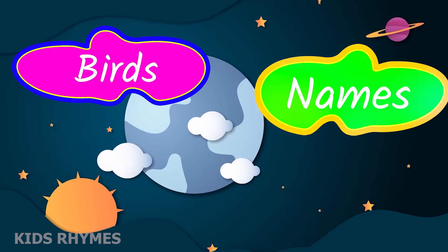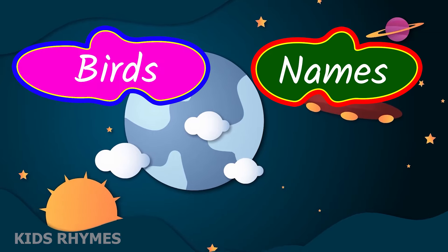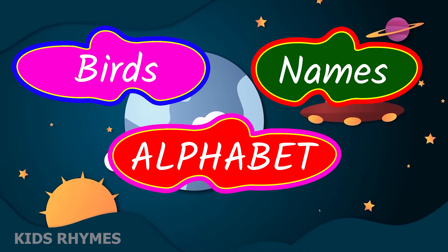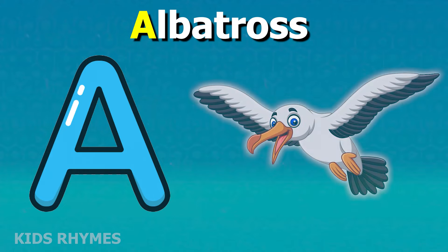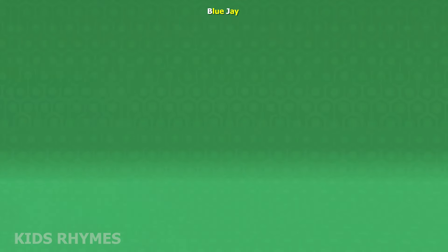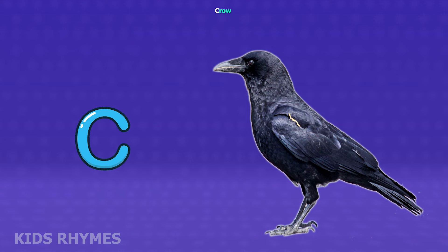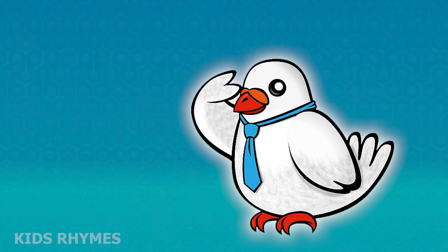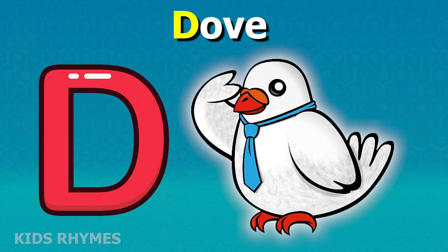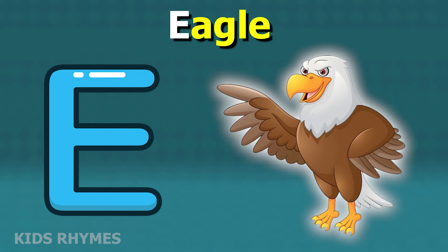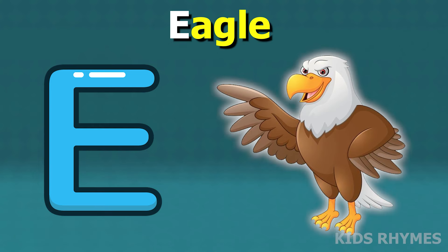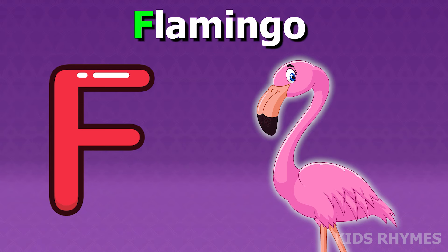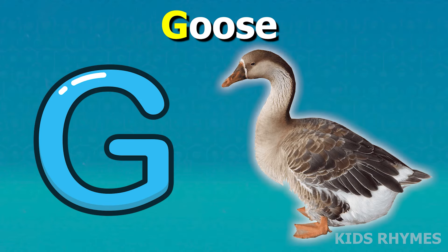Bird names according to alphabets: A for albatross, B for blue jay, C for crow, D for dove, E for eagle, F for flamingo, G for goose.